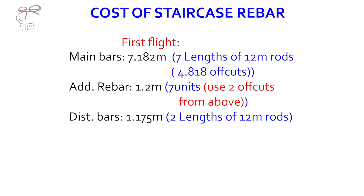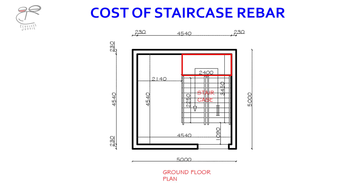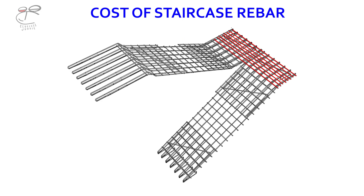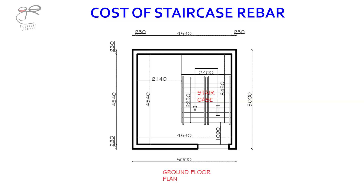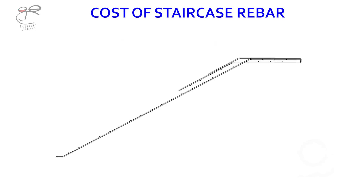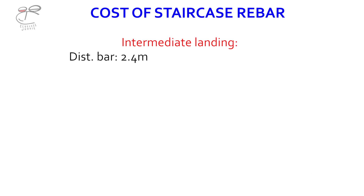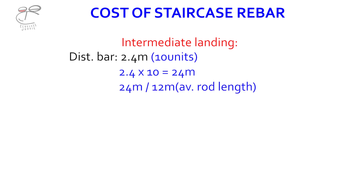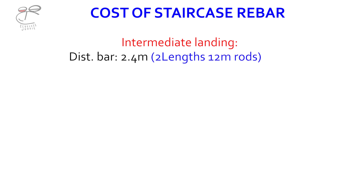Moving on to the intermediate landing — the distribution bar is about 2.4 meters, going from the floor plan. We specify that distribution bar as 2.4 meters. How many units? There are about 10 units on the intermediate landing. So 2.4 multiplied by 10 gives 24 meters. 24 meters divided by 12-meter rod length gives about two lengths of 12-meter rods for the intermediate landing.